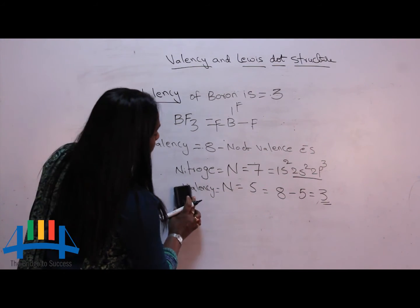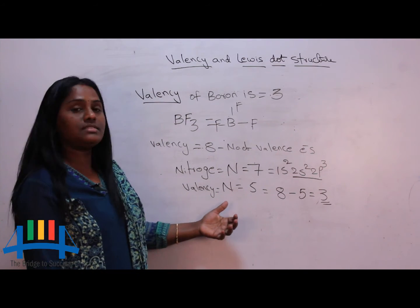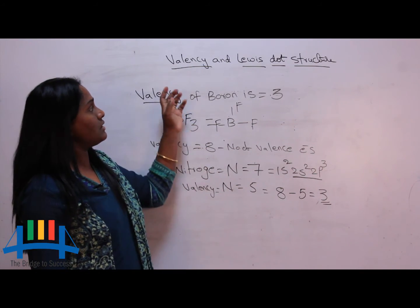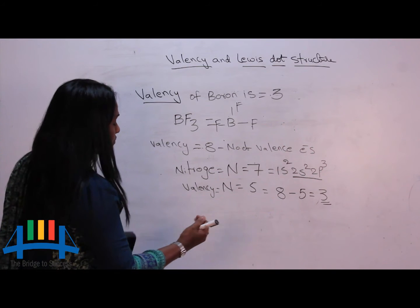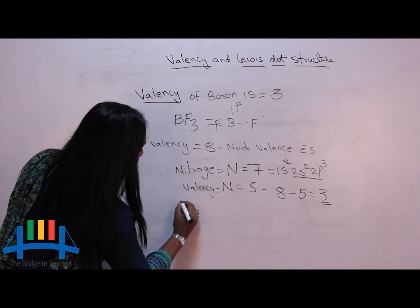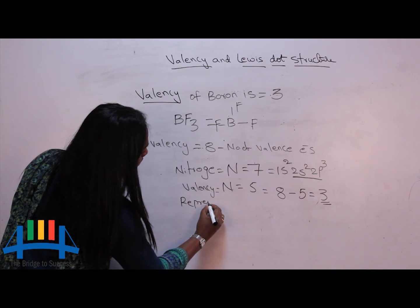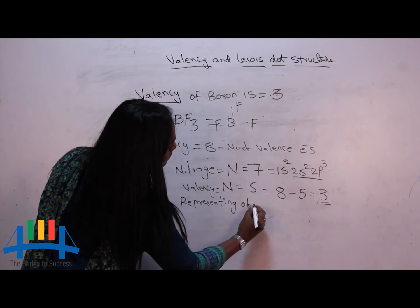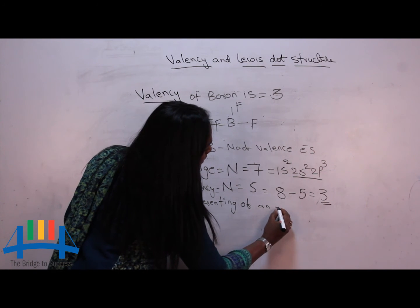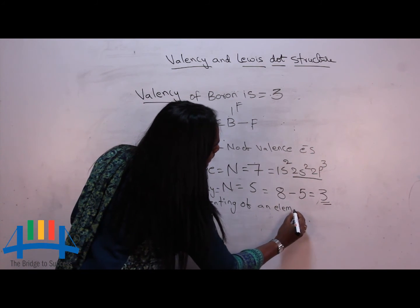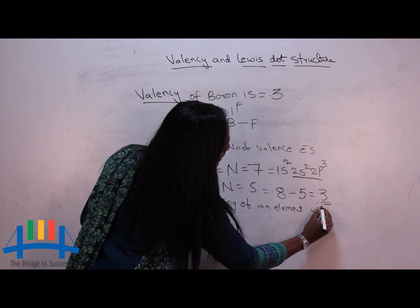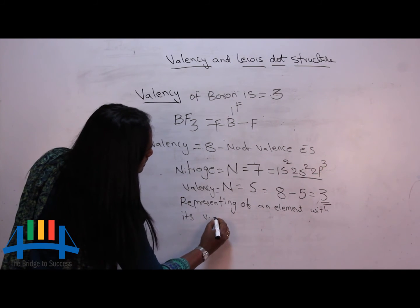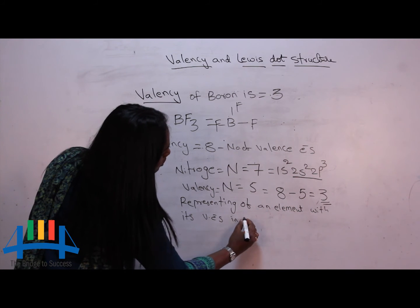Representing valence electrons around an element is called a Lewis dot structure. A Lewis dot structure is the representation of an element with its valence electrons shown in the form of dots.